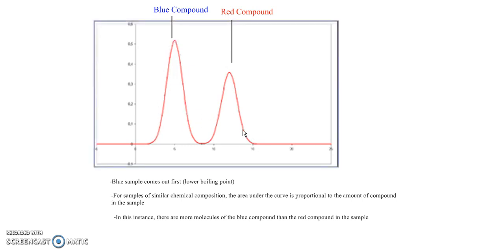Last thing I want to mention to you is that if these peaks come out too close together, there are a few things we can do to adjust how close together they are. One of the things we can do is we can raise the temperature or lower the temperature.